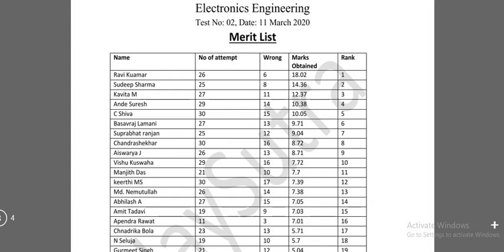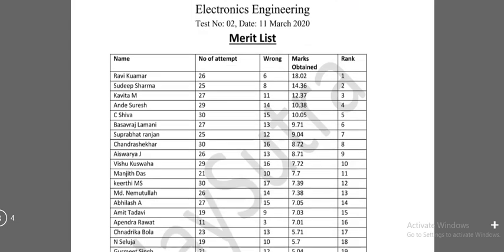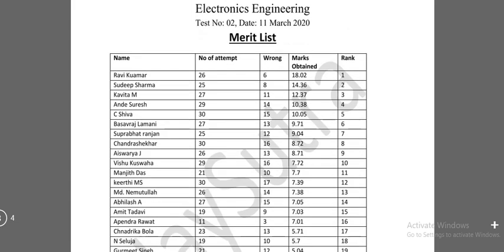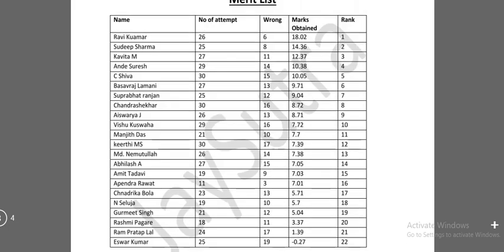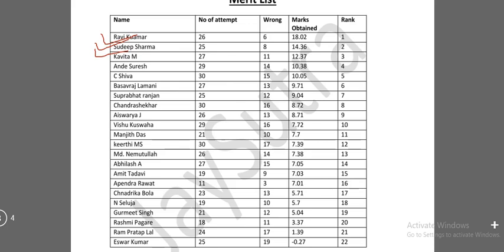The main aim of the test series is to give you a platform like a real examination and to build the habit of doing a minimum number of wrong answers. This is the electronics engineering test 2 merit list. I am congratulating Ravi Kumar, Sudip Sarma, and Kavita M — they are the top three of this examination and they submitted within the time limit. Fourth is Andes Res. I am also telling all friends: please don't ask for my personal WhatsApp number, because there are so many subscribers and I cannot give my number to each and everyone.